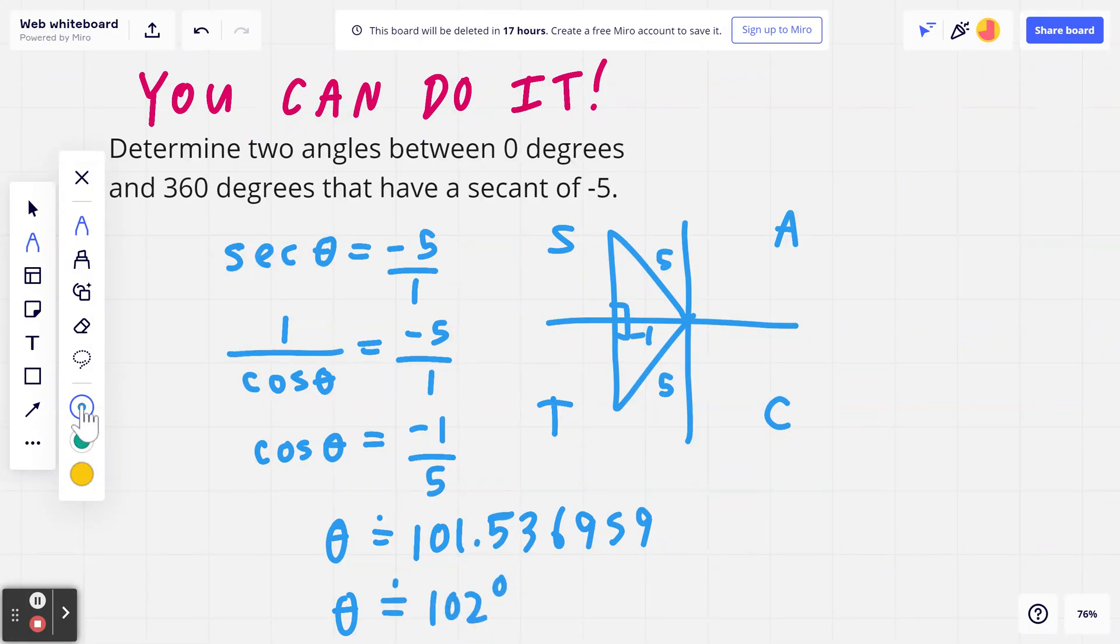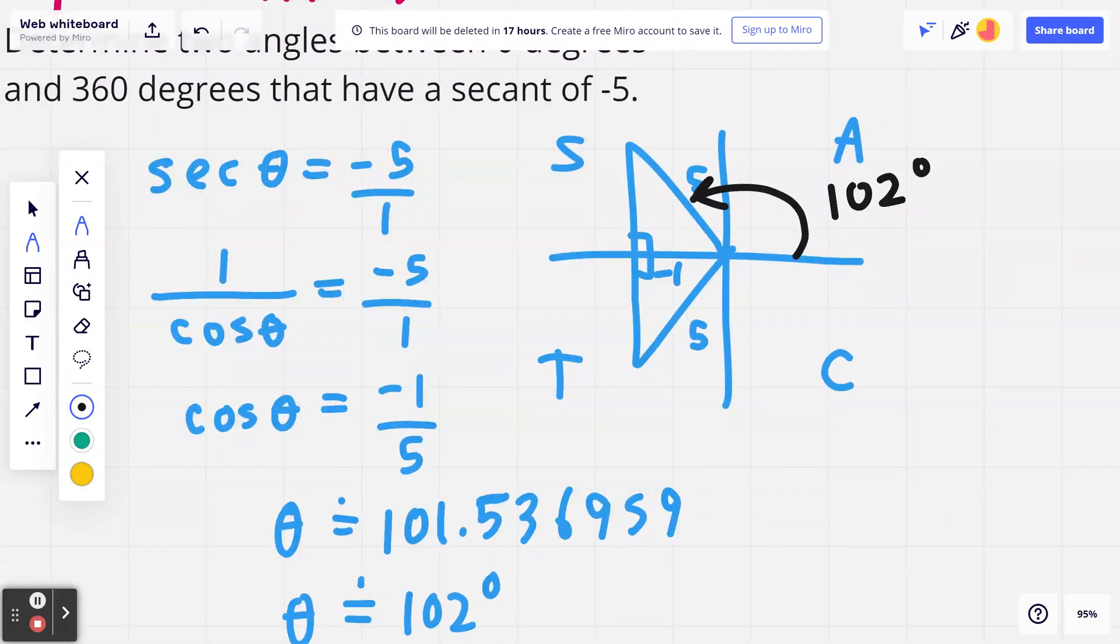What that means is that this angle right here is going to be 102 degrees. That is called the principal angle. If you think about the related acute angle, that's going to be 180 minus 102, which is 78 degrees. Same thing here, that's going to be 78 degrees.